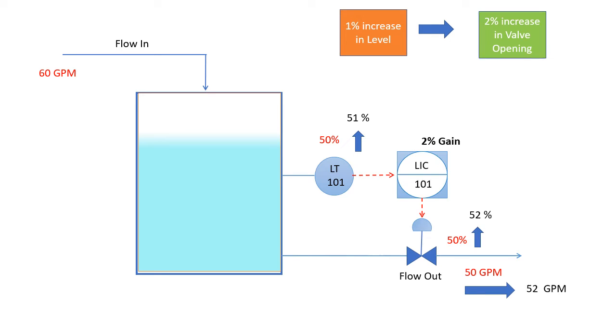As a result, the flow will increase to 52 GPM. Still the flow at the outlet is less than the flow at the inlet, so level is still raising. Suppose the level increased to 55 percent. At this moment, the output of the valve should be 60 percent leading the flow to 60 GPM. At this moment, inlet flow is equal to outlet flow, so there is no further increase or decrease in the level.